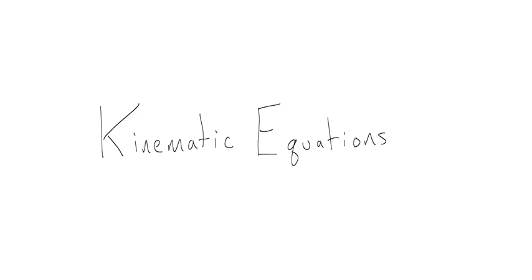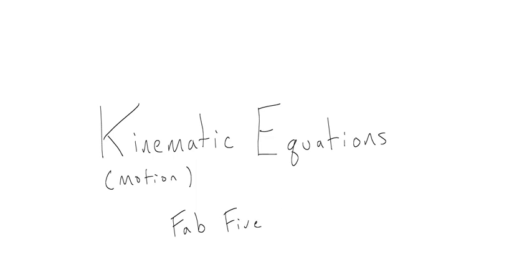We're going to talk about the kinematic equations, which are sometimes known as the motion equations. The word kinematic basically means motion. Some people say that there are four, and I will say that there are five, and so we will sometimes call these the 'fab five' equations.